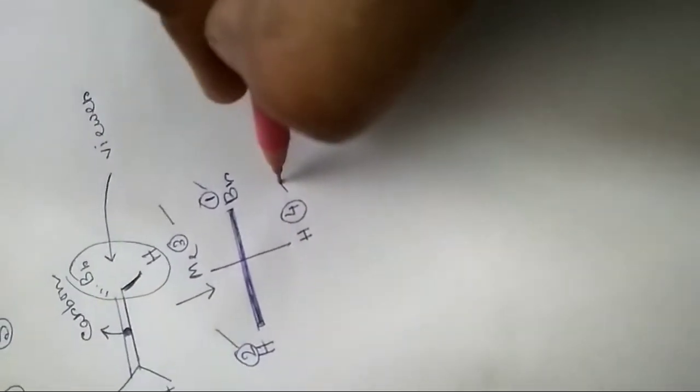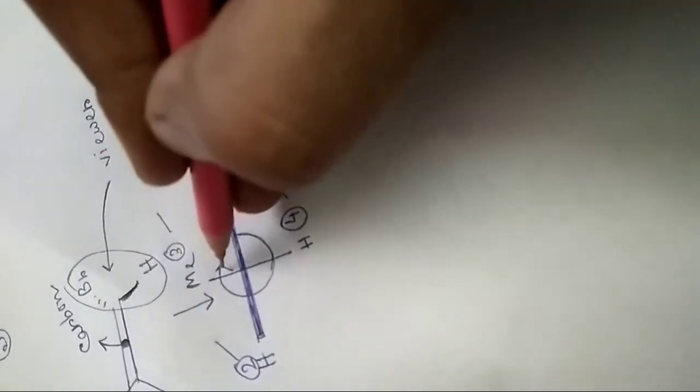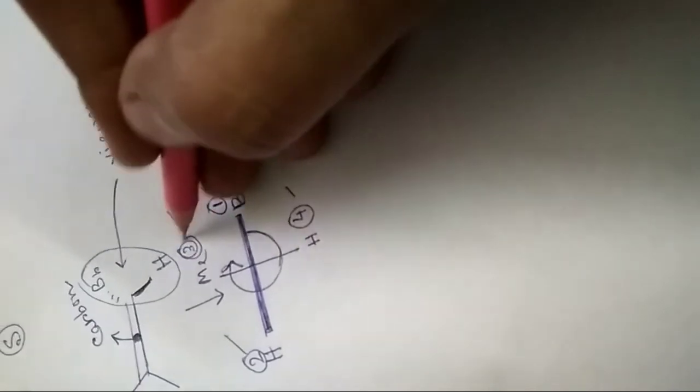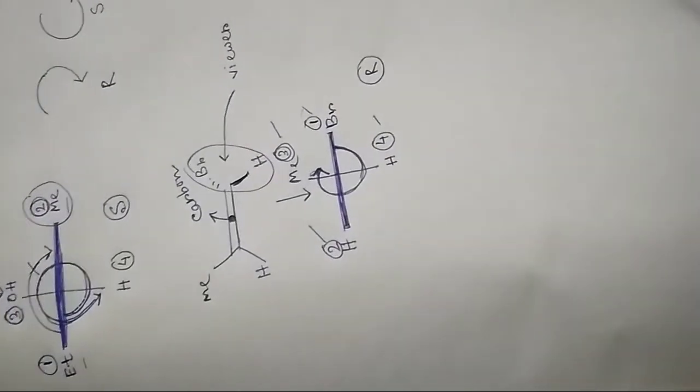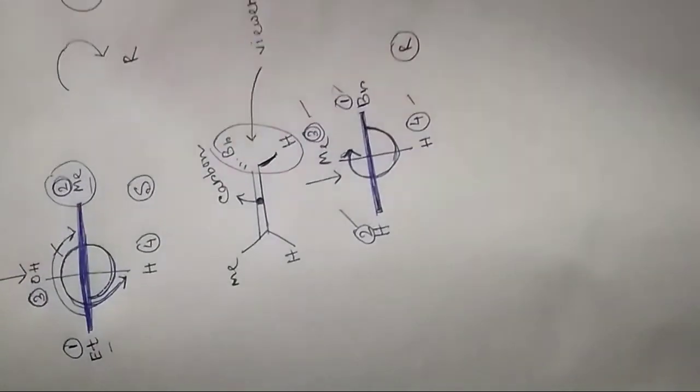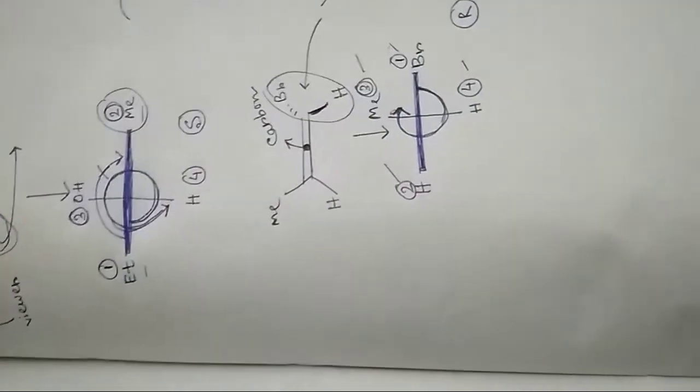So: first is Br, second is H, third is Me, fourth is H. We rotate from first to second. The correct rotation does not involve crossing the third priority group. In this case the rotation is clockwise, so the configuration of this molecule is R.